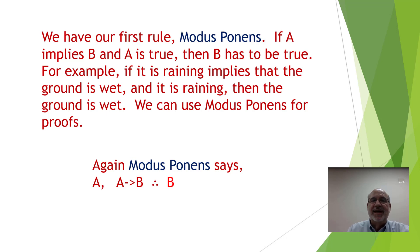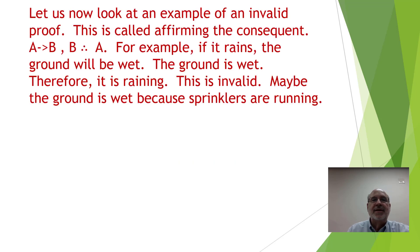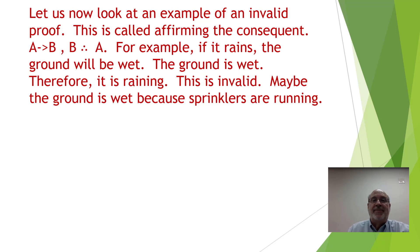Now let's look at an example of an invalid proof. This particular one is called affirming the consequent: A implies B, B, therefore A. For example, if it rains the ground will be wet; the ground is wet; therefore it is raining. This is an invalid proof — maybe the ground is wet because sprinklers are running.